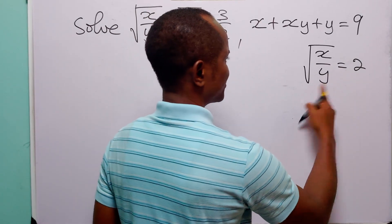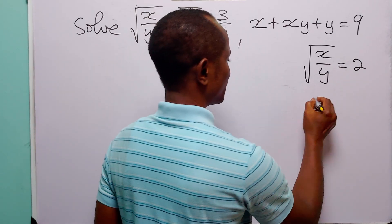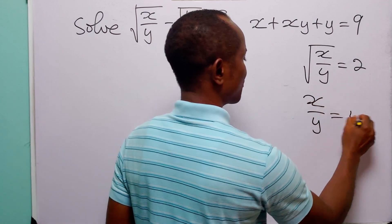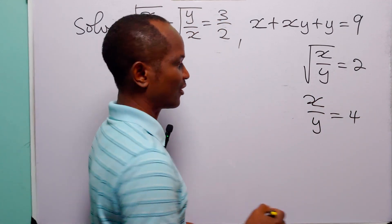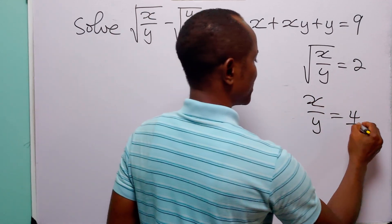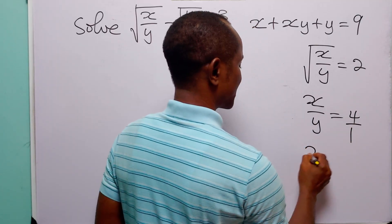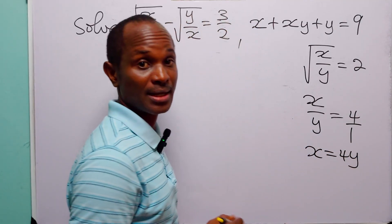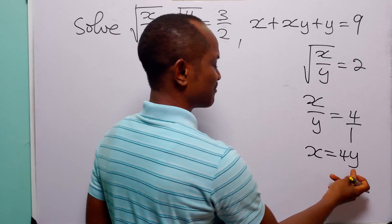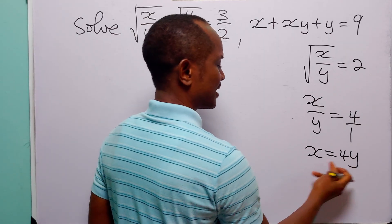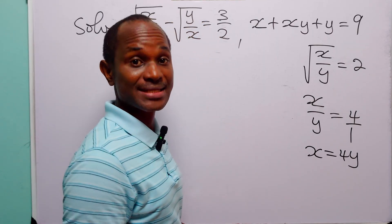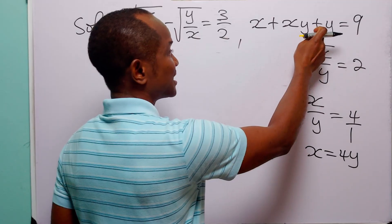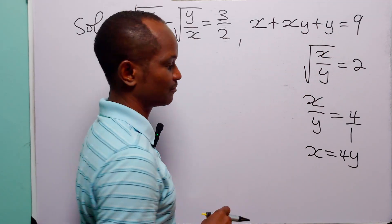When we square both sides of this equation, we have x over y is equal to 4. And when we cross multiply, we have x is equal to 4y. We now have a simple linear relationship between x and y, which we can substitute into the second equation.